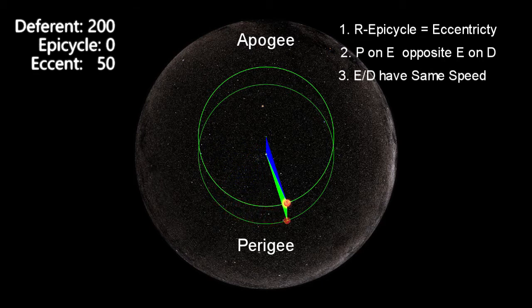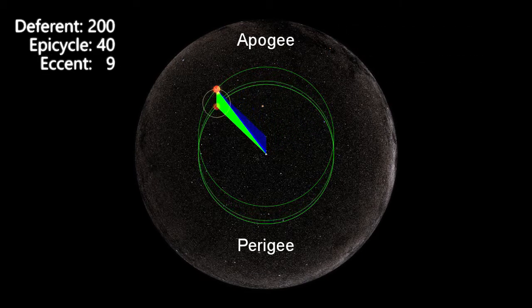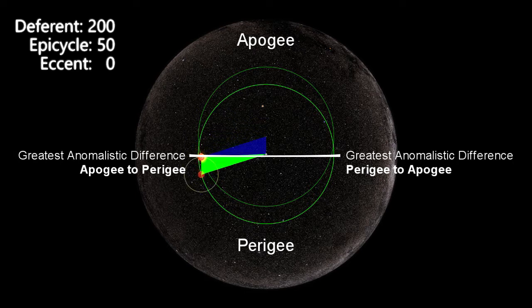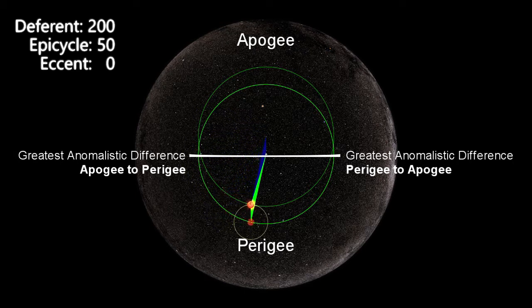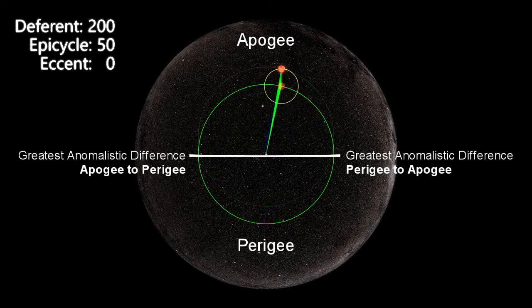And third, that the planet travel round the epicycle at the same speed that the epicycle travels round the deferent. In both cases, the path of the planet is identical, and the greatest anomalistic difference between the true Sun and the mean Sun occurs at 90 degrees, as measured along the deferent from the apogee or the perigee.